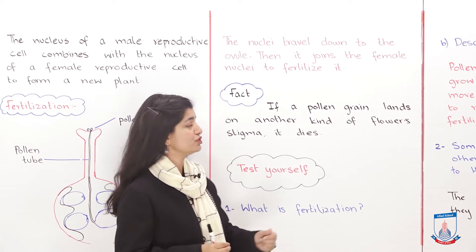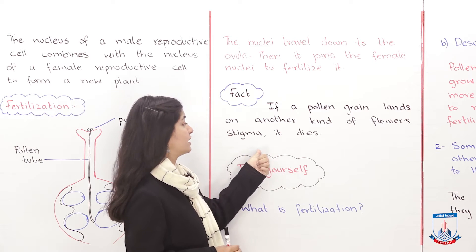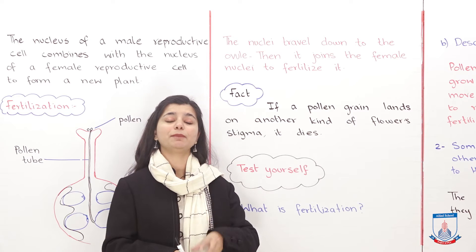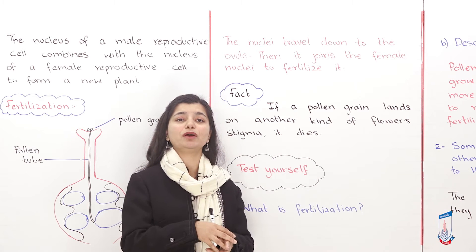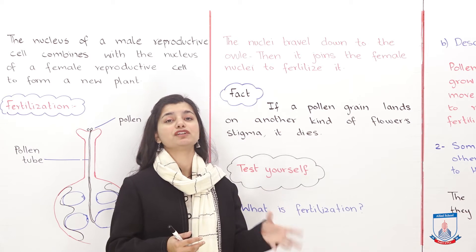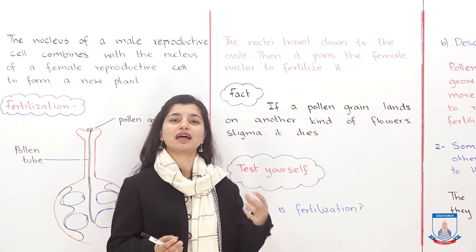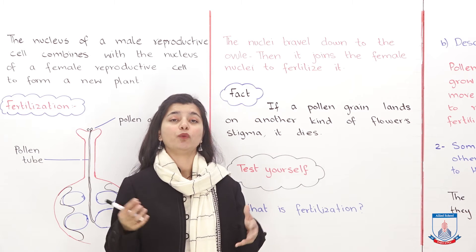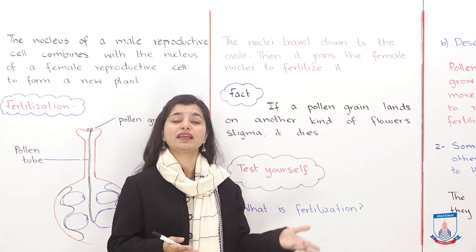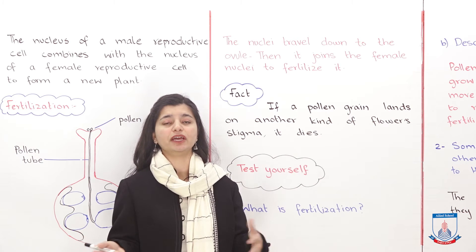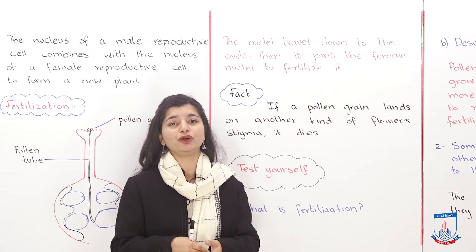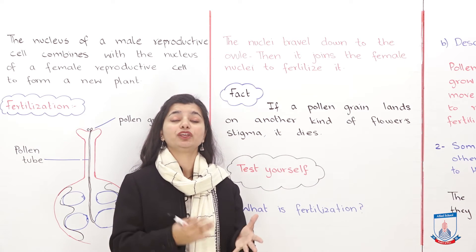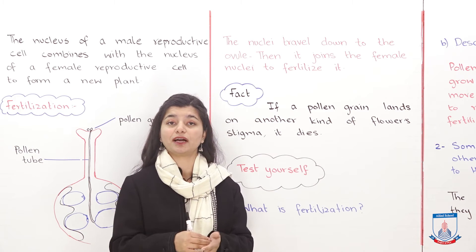Here is an interesting fact: if a pollen grain lands on another kind of flower's stigma, it dies. A flowering plant is only fertilized when its pollen grains land on the stigma of the same kind of flower — a sunflower fertilizes with a sunflower, roses with roses. If pollen goes to another kind of flower, it will not grow a pollen tube; instead, that pollen grain dies and will not be of any use.